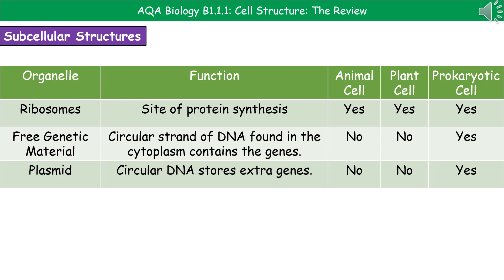The next table covers three additional subcellular structures. First are the ribosomes, which are the site of protein synthesis — where we actually make proteins — and are found in all three types of cell. Next is the free genetic material, which is the circular strand of DNA found in the cytoplasm containing the genes, and this is only in prokaryotic cells because they have no nucleus. The last one, plasmids, are circular DNA stores that contain extra genes, also only found in prokaryotic cells, not in animal and plant cells.